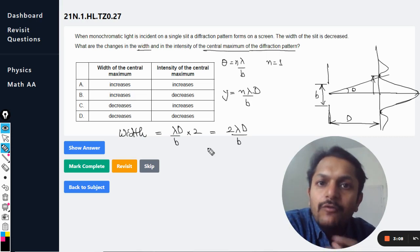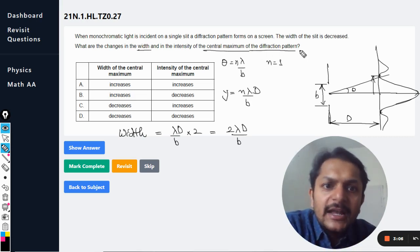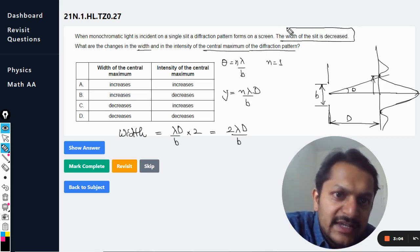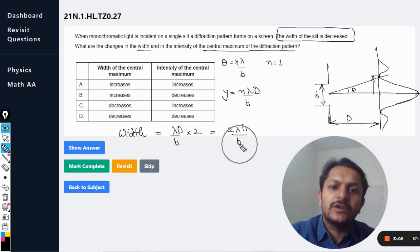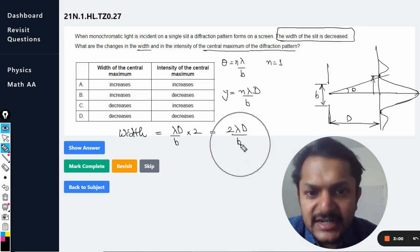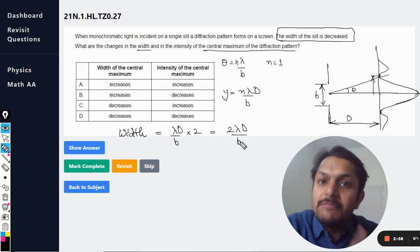And now we want to comment on this. They say that the width of the slit is decreased. Now what is the width of the slit? b. So if b is reduced, what is happening to the maxima?